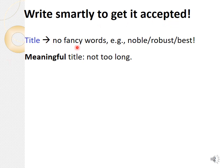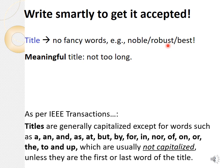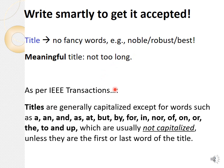First, the title should have no fancy words — no 'novel,' 'robust,' or 'best method.' If you have something to show, it will be visible in the paper. A meaningful title is important; not too long. Sometimes titles run three or four lines, becoming almost half the abstract. Don't do that. Look at the different journals' guidelines — for example, IEEE Transactions has specific instructions.